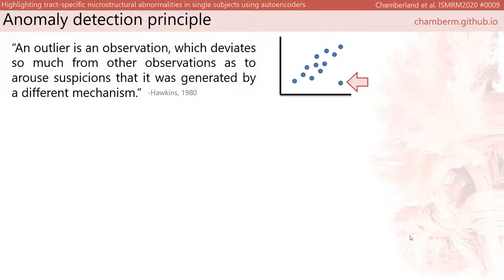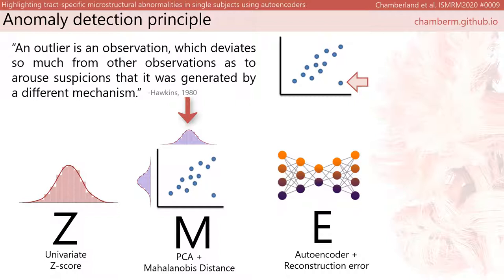In general, anomalies have the following important characteristics: they are different from the norm. Various techniques exist, ranging from traditional z-scores to multi-dimensional approaches like PCA, or, as we will see in this talk, using artificial neural networks.